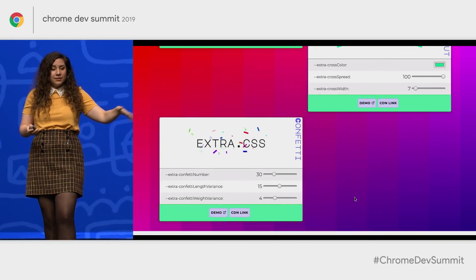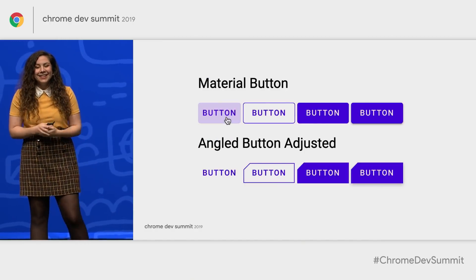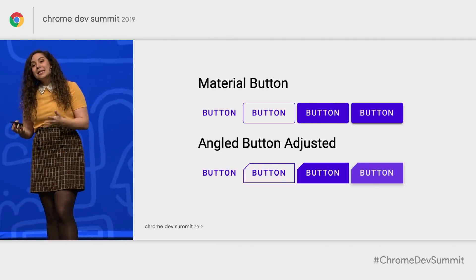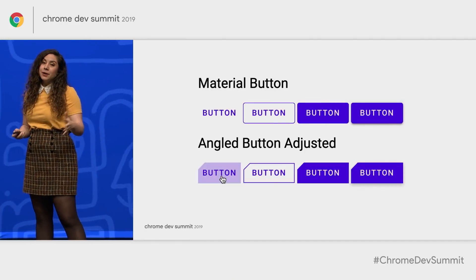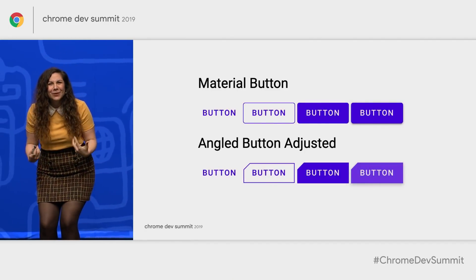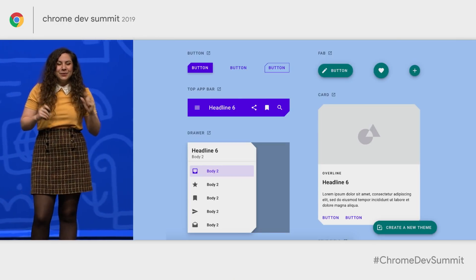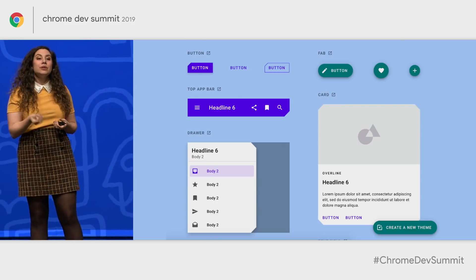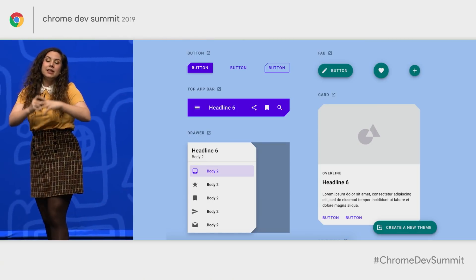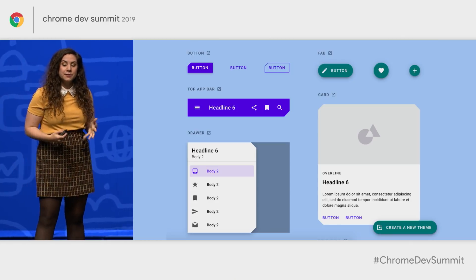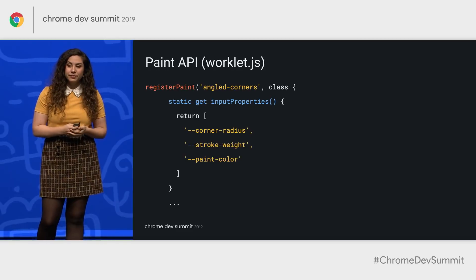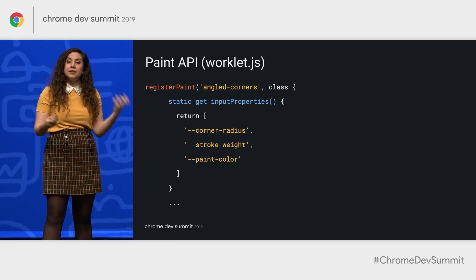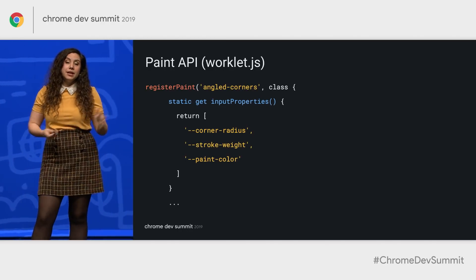For a more practical example, I played with recreating angled corners on the web using Houdini. This currently isn't possible on the web, but it is possible on other platforms like Android and iOS. In the Material spec we have angled corners, but it's not something we can do on the web yet — and I wanted our platform to have nice things too. I had a few requirements: I wanted to set each corner individually just like you can with border-radius, and I wanted this to be a truly cut element, meaning the ripple wouldn't extend past the element itself. So I used a mix of custom properties and input arguments. Here's that worklet: registerPaint with the name 'angled-corners', pulling in those input properties the worklet will look at.